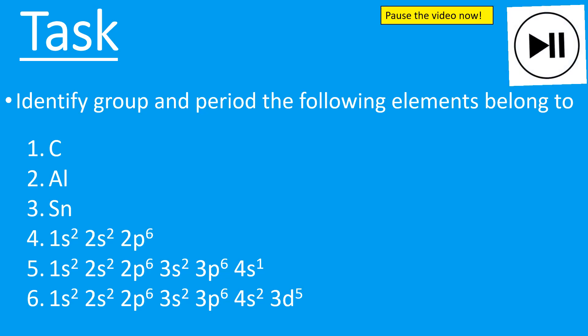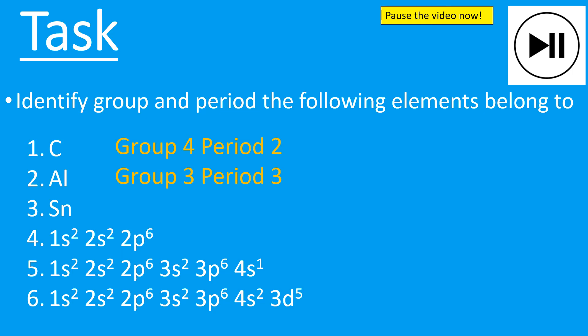Now it's your turn. Pause the video. For the first three questions, identify the group and period just from the symbol using your periodic table. For questions four, five, and six, do not use a periodic table — use the electron configurations to identify period and group. When ready, unpause. Carbon is group four, period two. Aluminium is group three, period three. Tin is group four, period five. For question four, it's group eight because there are eight electrons in the outer shell — two in the s and six in the p, two plus six is eight — and period two because it has two shells.